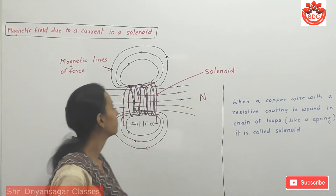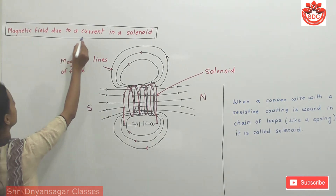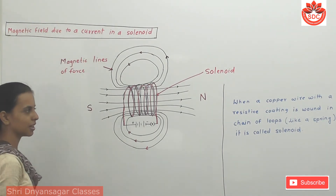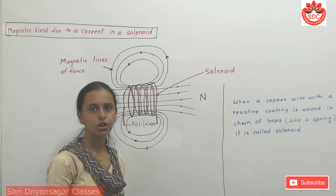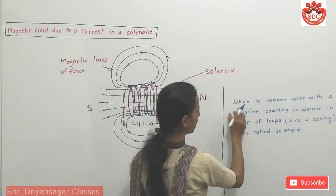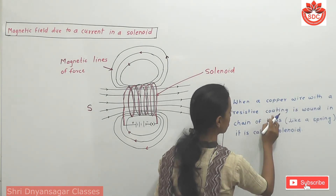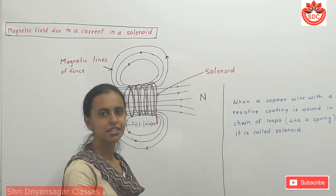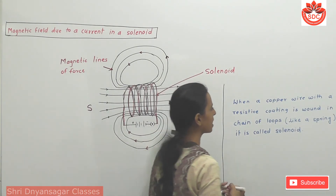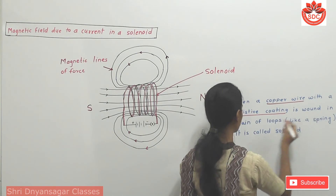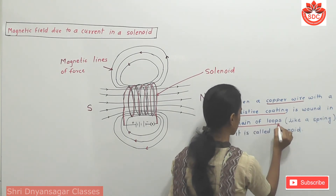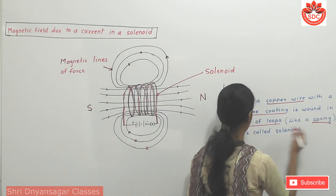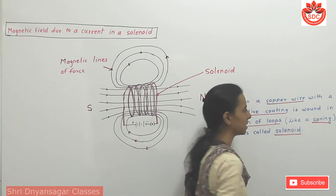The next concept is the magnetic field due to current in a solenoid. A solenoid has current passed through it to produce a magnetic field. The definition of a solenoid: when a copper wire with insulating coating is wound in a chain, it forms a spring-like structure. It is called a solenoid.